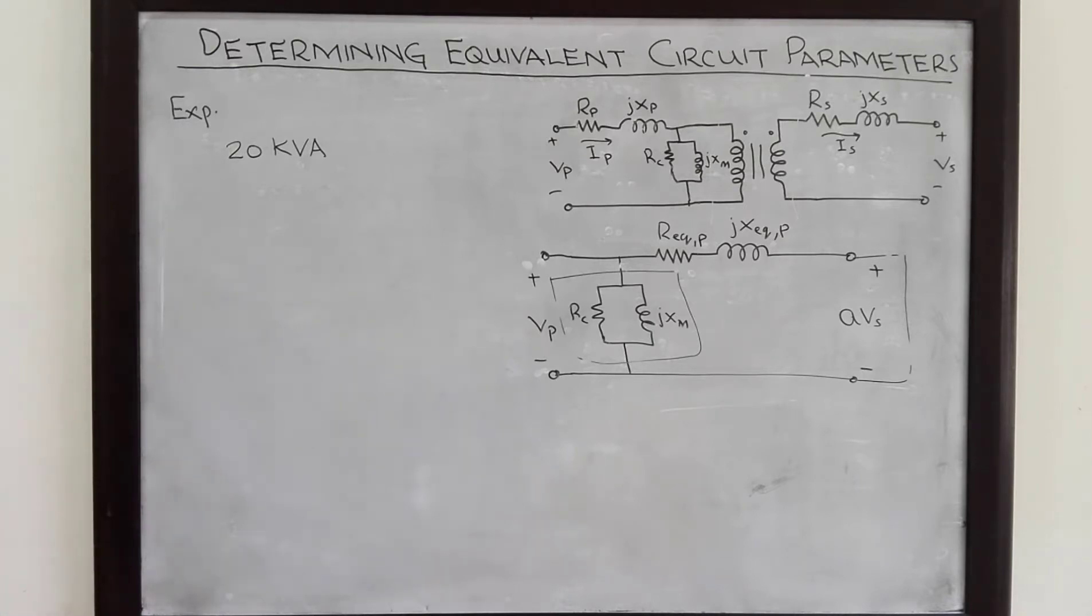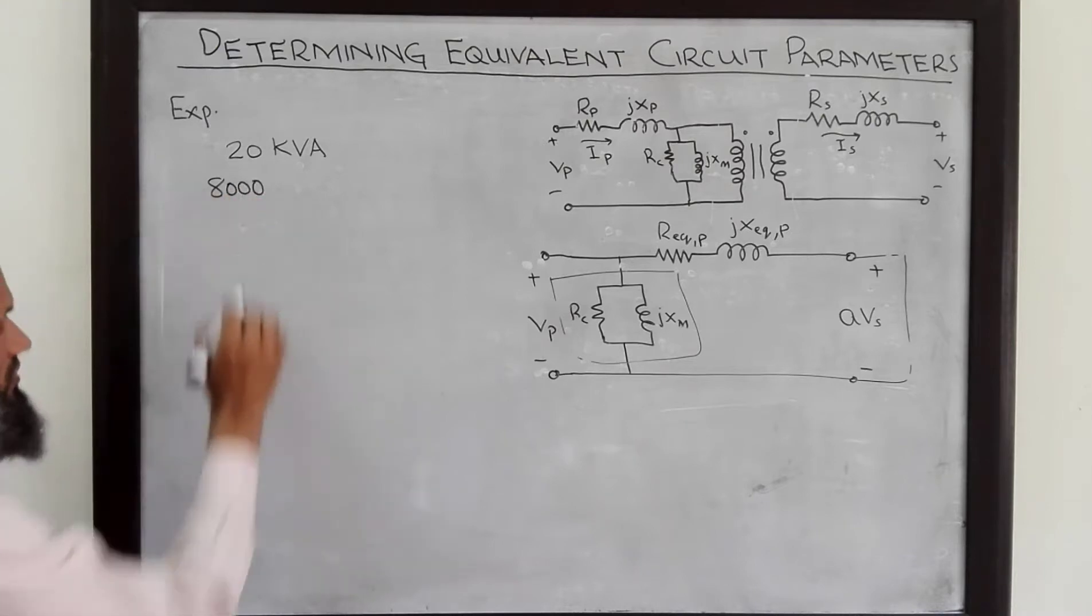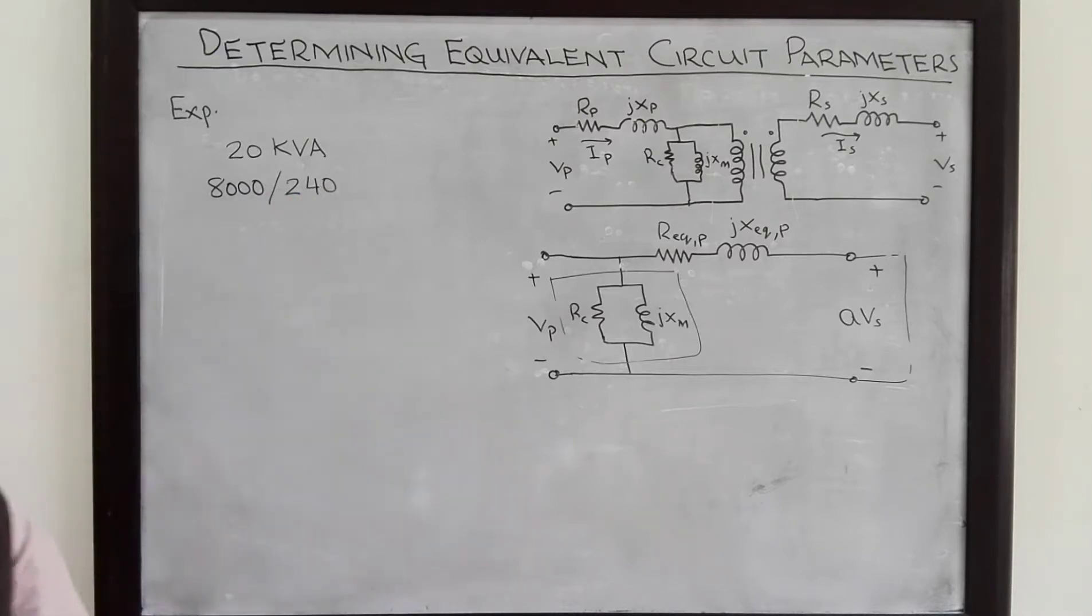The reason will be clear when we shall be talking about the ratings of the transformers and other machines. The primary voltage or the high voltage side voltage rating is 8000 volts and the low voltage side rating is 240 volts.